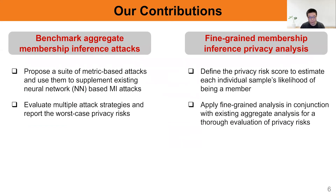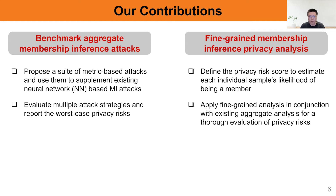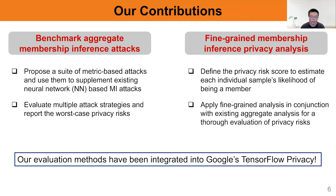For our paper, we mainly have two contributions. In the first part, we benchmark aggregate membership inference attacks by proposing several metric-based attacks to supplement existing neural network-based attacks. We argue that we should evaluate multiple attack strategies and report the worst-case privacy risks. In the second part, we provide a fine-grained privacy analysis by defining a new metric called privacy risk scale to estimate each sample's probability of being in a training set. Also, our evaluation methods have already been integrated into Google's TensorFlow Privacy.